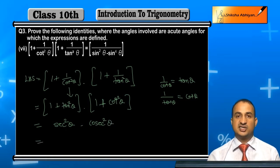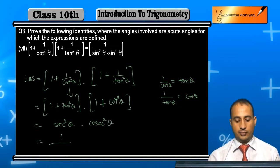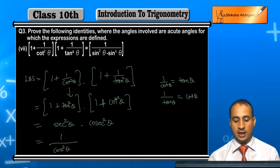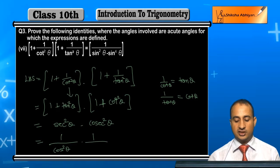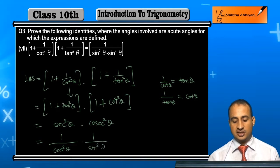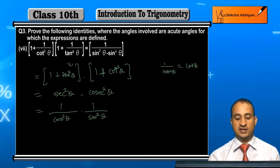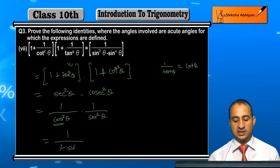Now, we need to change everything to sin. So sec²θ is 1/cos²θ, which I can write as sin²θ/[cos²θ × sin²θ]. Now cos²θ can be written as (1 - sin²θ) multiplied by sin²θ.